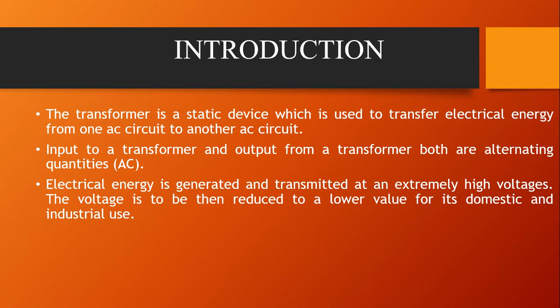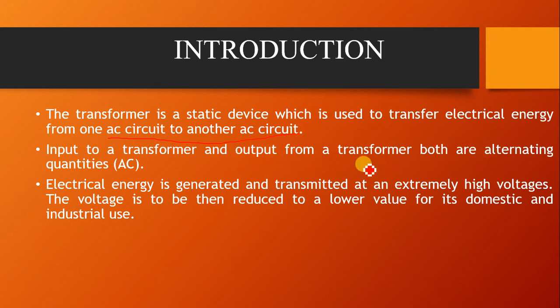A transformer is not a dynamic device — it is a static device with no moving components. It is used for transferring electrical energy from one electrical circuit to another, and it always works with AC circuits. There is no DC component in transformers; both input and output are alternating quantities.